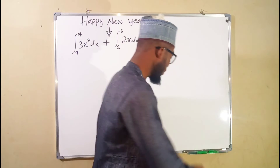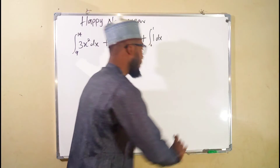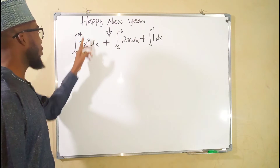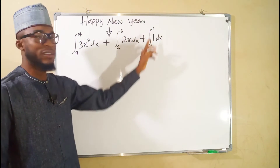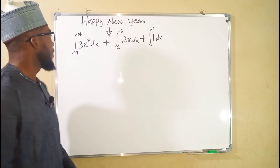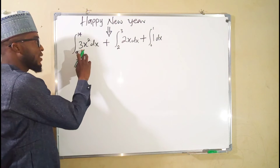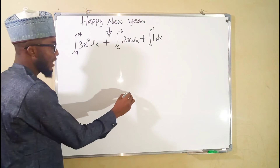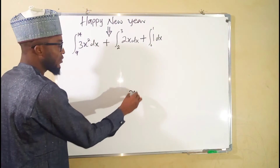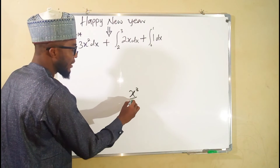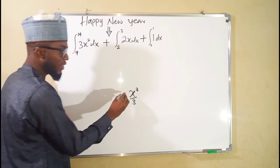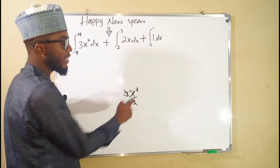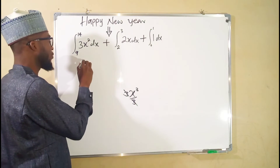This is a definite integral; this is why we have these boundaries. If you integrate x squared, you are going to obtain x to the third power divided by 3, but we already have another 3 here, so they will cancel out, leaving only x to the third power.